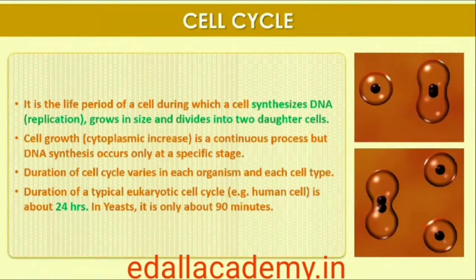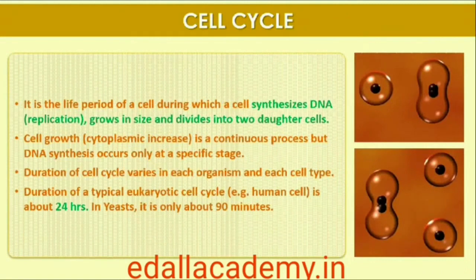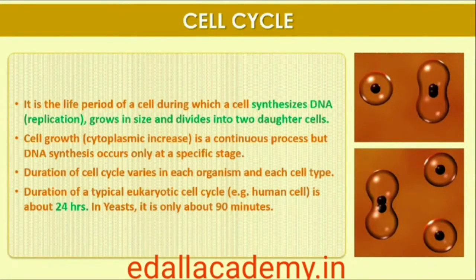A typical eukaryotic cell cycle is illustrated by human cells in culture. These cells divide once in approximately every 24 hours. However, the duration of the cell cycle can vary from organism to organism and also from cell type to cell type. Yeast, for example, can progress through the cell cycle in only about 90 minutes.